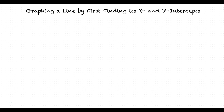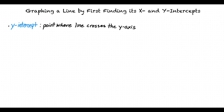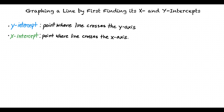This video will cover the topic of graphing a line by first finding its x- and y-intercepts. The y-intercept of a line is the point at which the line crosses the y-axis, and the x-intercept of a line is the point at which the line crosses the x-axis.